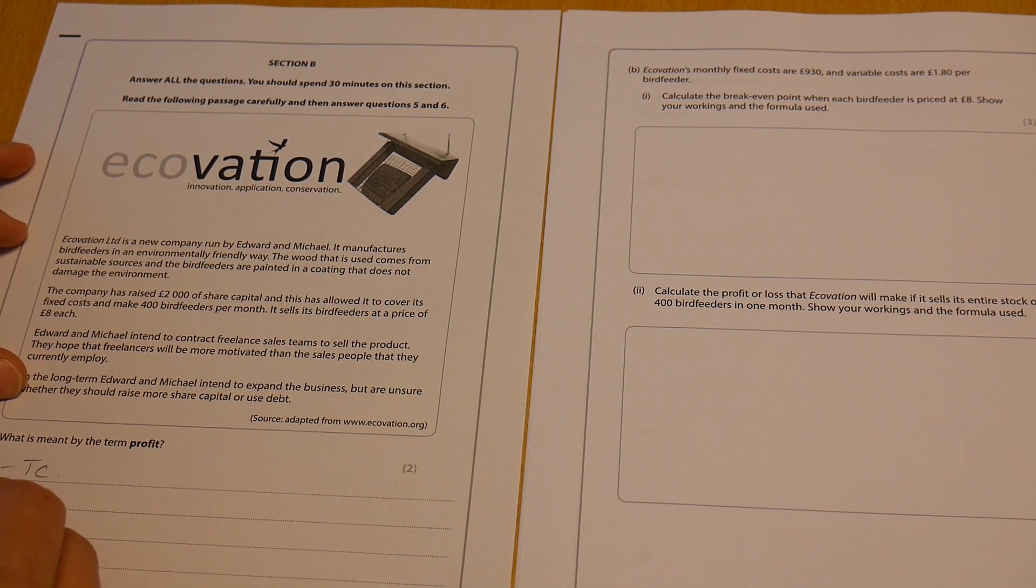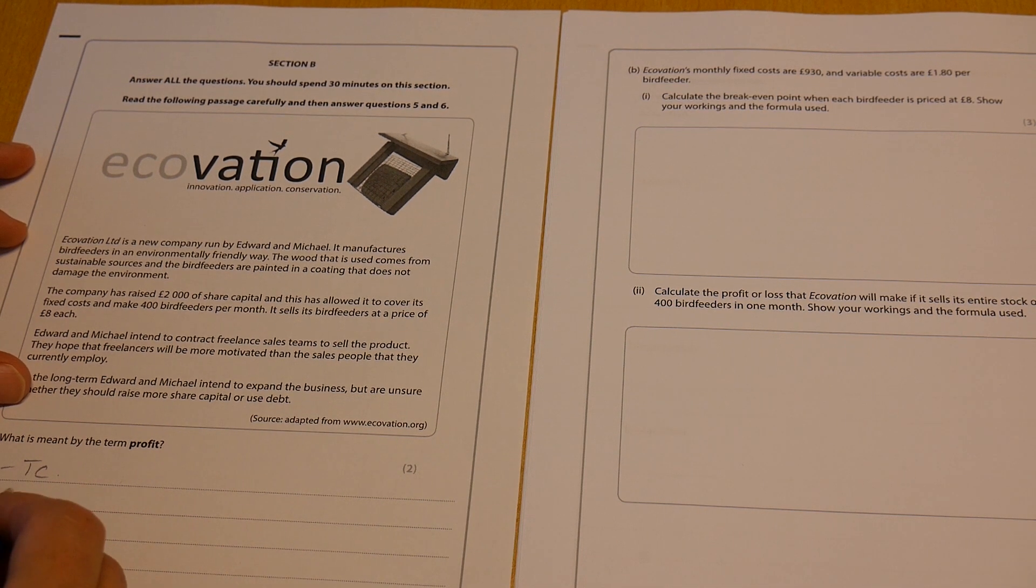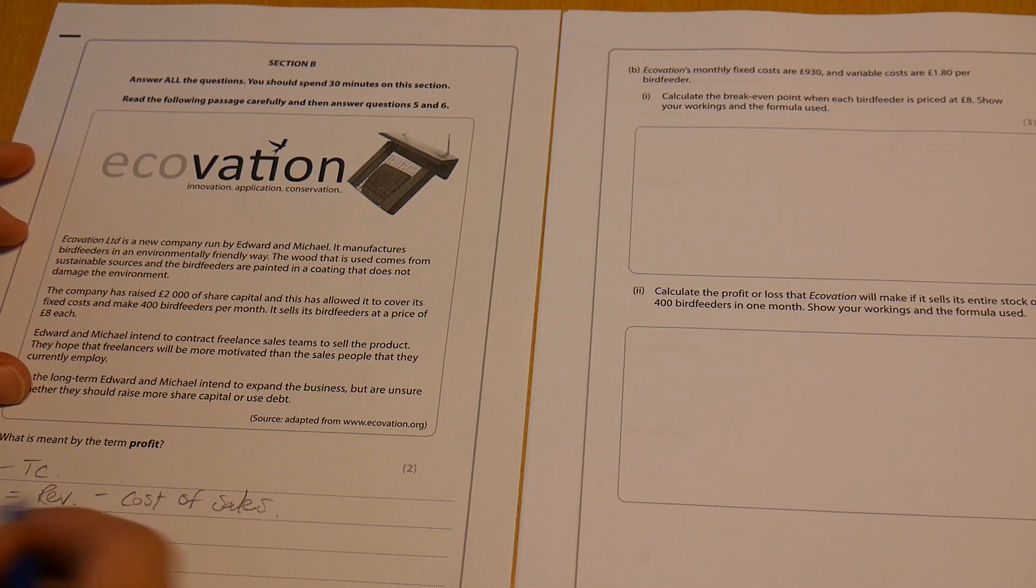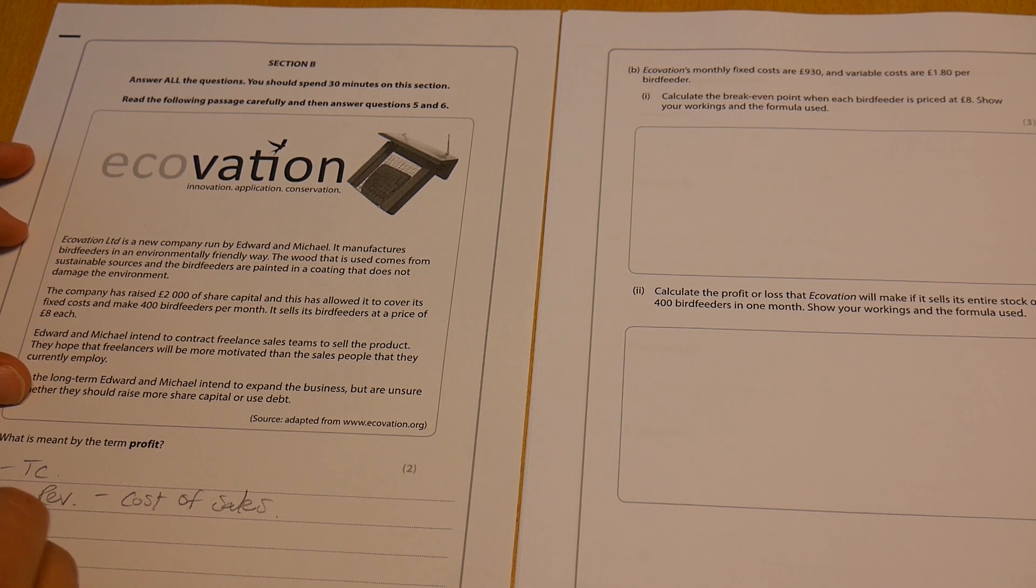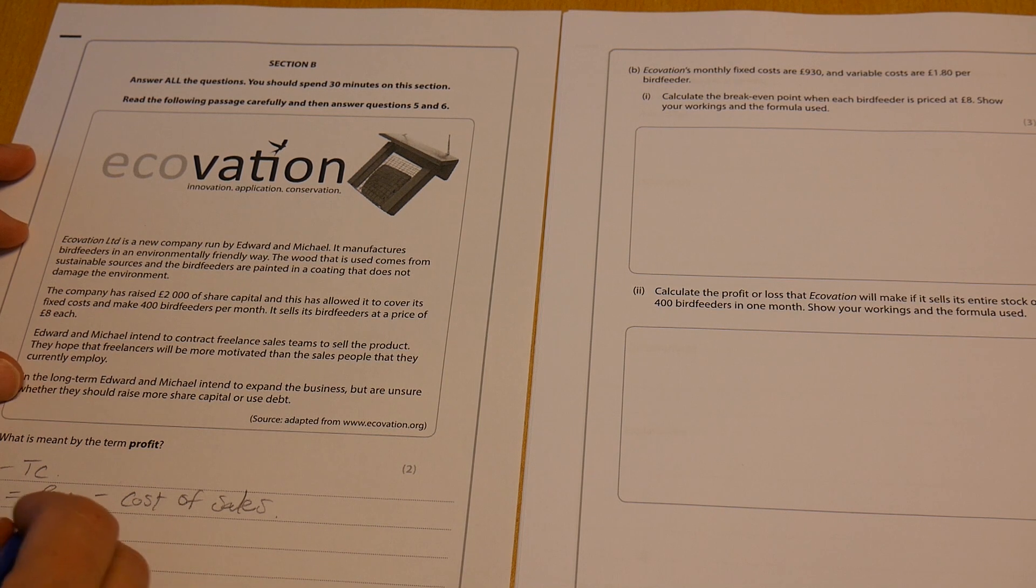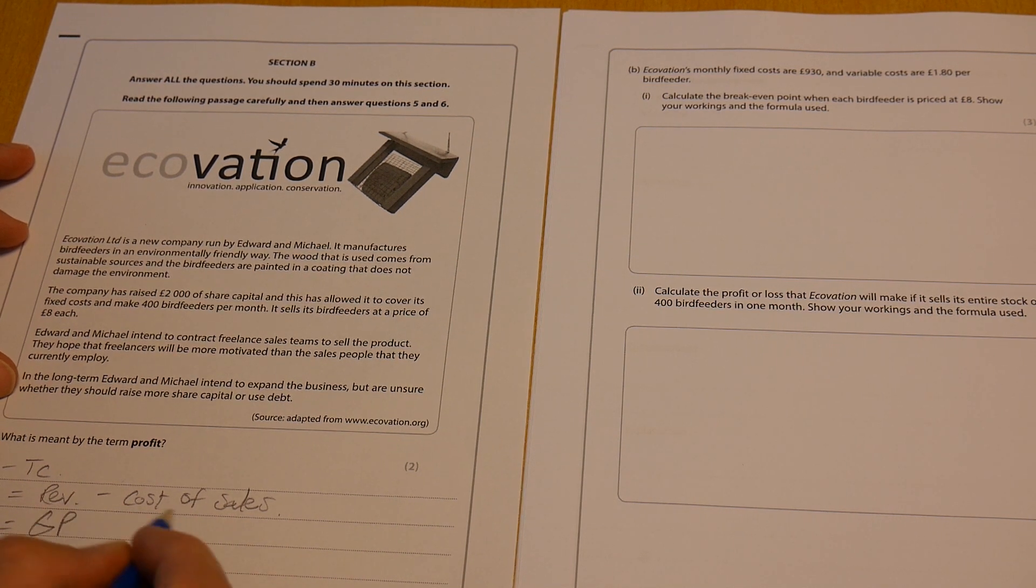But you need to be aware of gross profit. Gross profit is of course your revenue minus your cost of sales - that is really the cost of buying stock or inventories. So revenue minus cost of sales equals your gross profit.